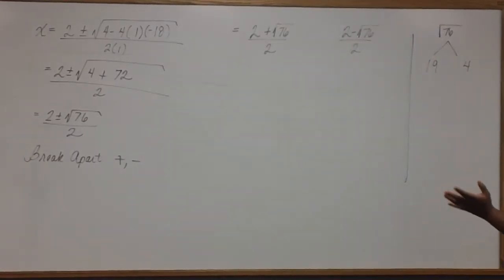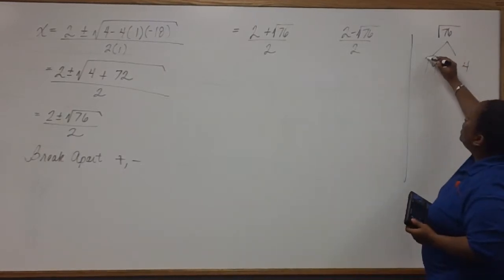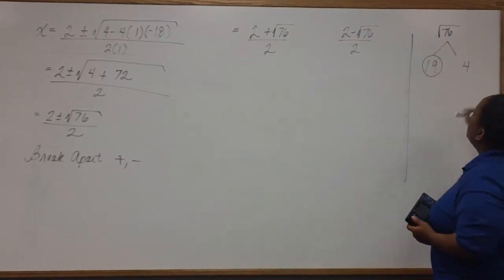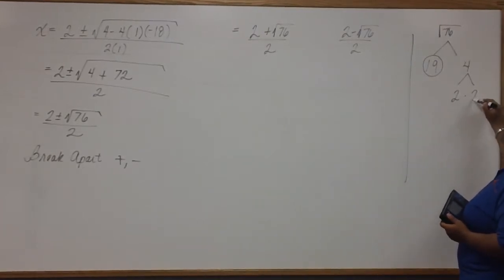You might start off with two other numbers, but our prime factorization will end up the same. So 19 is already prime. But 4 can be broken down into 2 times 2.